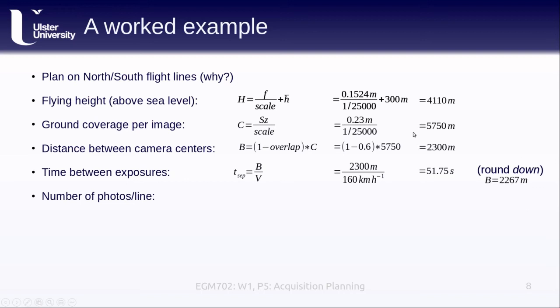We're planning on north-south flight lines, which means that our number of photos is going to be the length of the line divided by the distance between the camera centers, and we're going to add two, one photo at the beginning of the line, one photo at the end of the line. This comes out to 16,000 meters per line, because remember we're doing north-south flight lines, and we have a 16-kilometer long study area, divided by 2,267 meters per photo plus two gives us 9.1 photos per line. And of course, we round up. We want to make sure that we have full coverage, so we're going to round up for the number of photos.